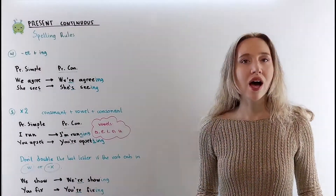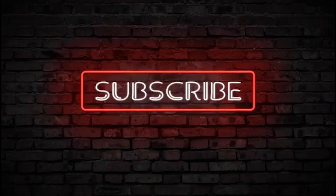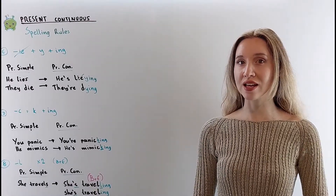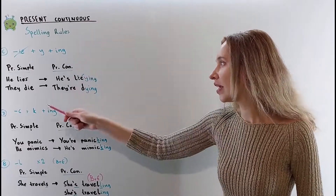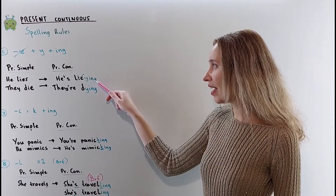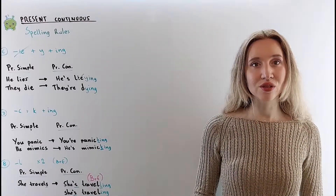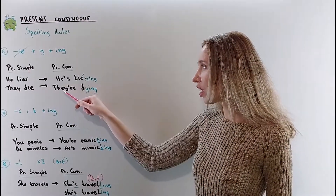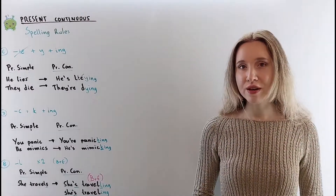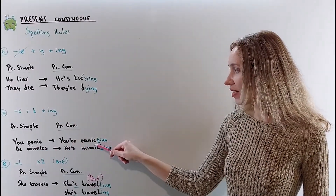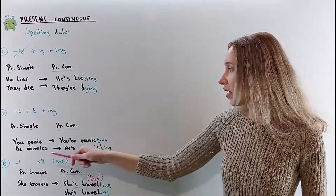When the verb ends in IE, remove the IE, add a Y and then ING. He lies → he's lying. The verb 'lie' means to say something untrue or to be in a flat position. They die → they're dying. When the verb ends in C, add a K and then ING. You panic → you're panicking. He mimics → he's mimicking.